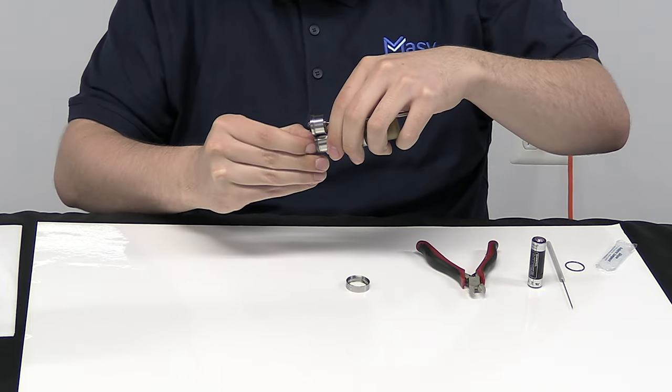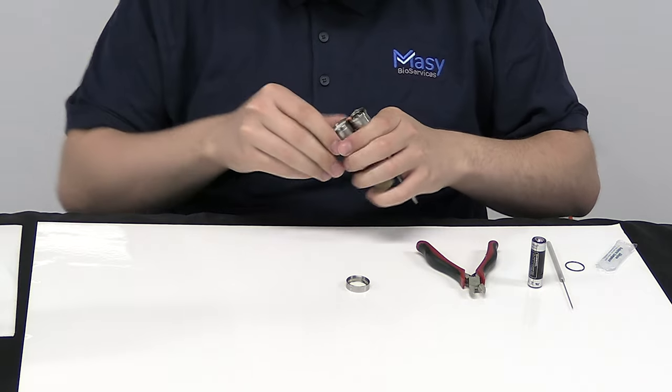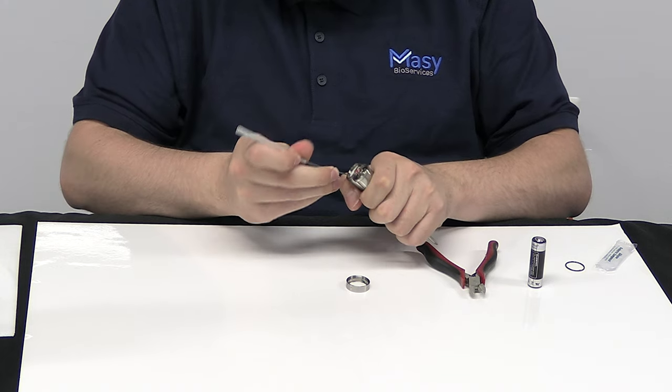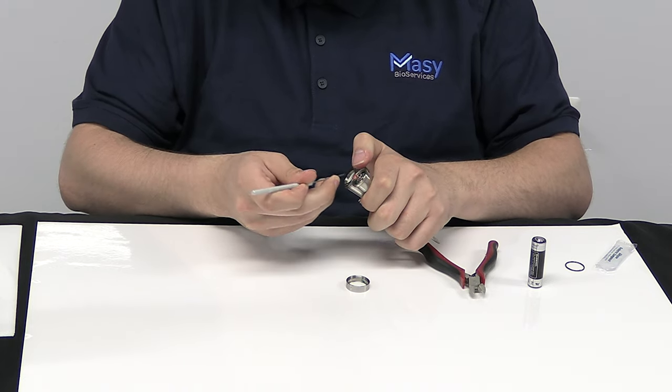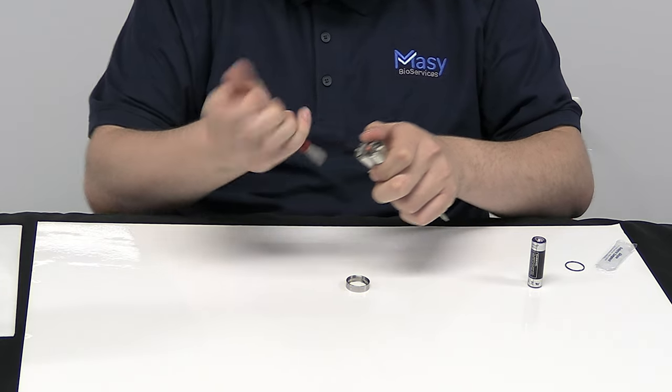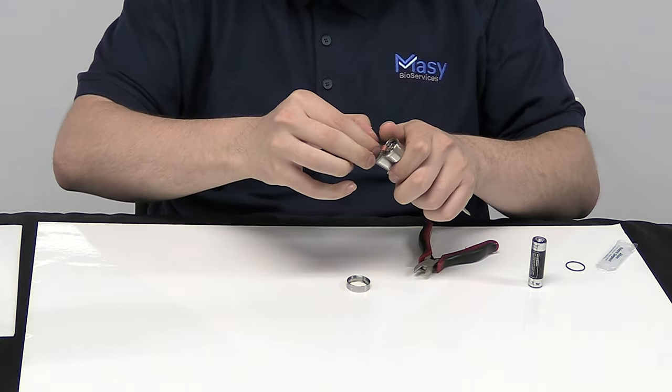Then we just slide out the old battery and put it aside and use our metal pick to pull out the old ring. At this point we'll want to use our clippers to snip that and discard it.